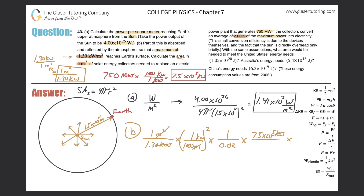All we have to do is calculate — multiply everything in the numerator, which are all 1s except for the 7.5 times 10 to the 5, then divide by the entire denominator: 1.3 times 1,000 squared — do not forget to square the 1,000 — then multiply by 0.02. This equals 28.8 squared kilometers, which would be necessary to substitute that particular power plant.